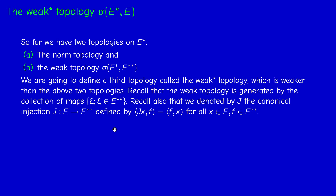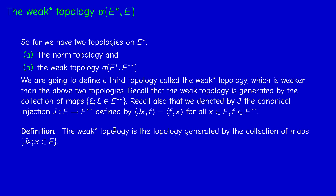The two collections coincide if and only if J is surjective. The weak-star topology is the topology generated by the collection {J(x) : x ∈ E}. This collection is a subset of the full collection, and the two coincide if and only if J is surjective, i.e., E is reflexive.